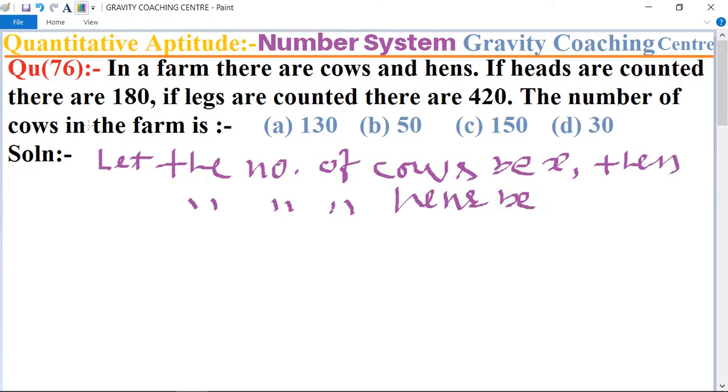The total number of heads is 180, and if the number of cows is X, then the number of hens equals 180 minus X. According to the question...